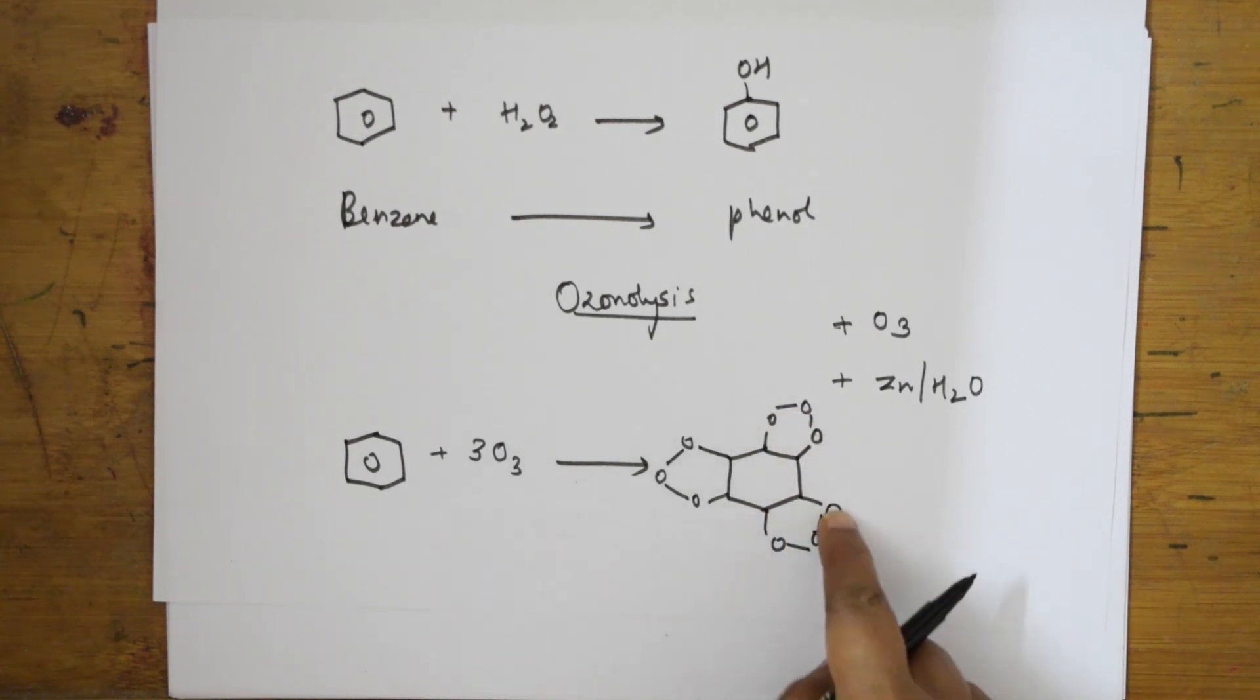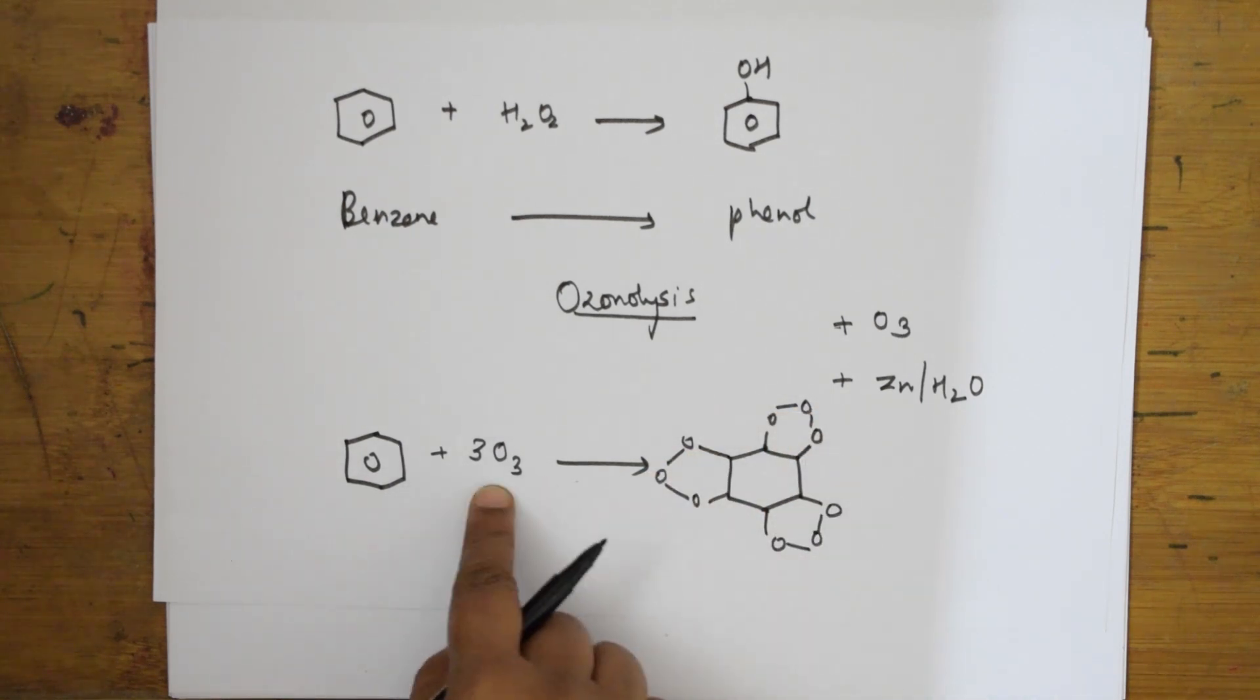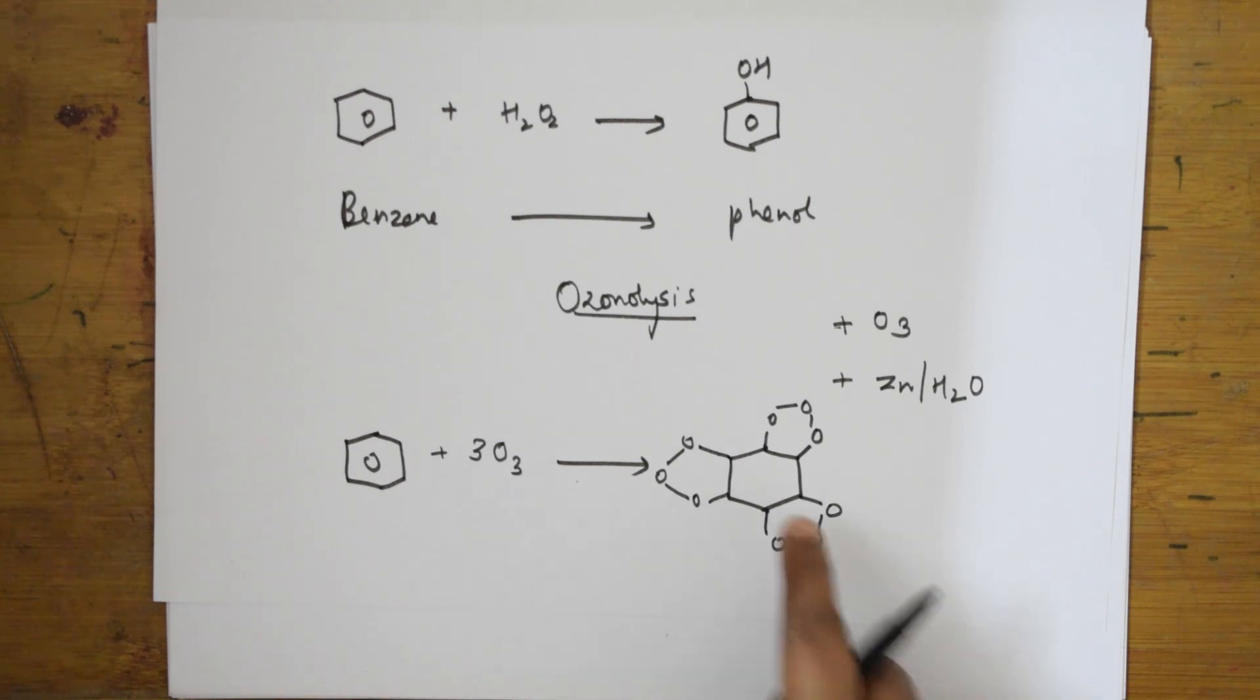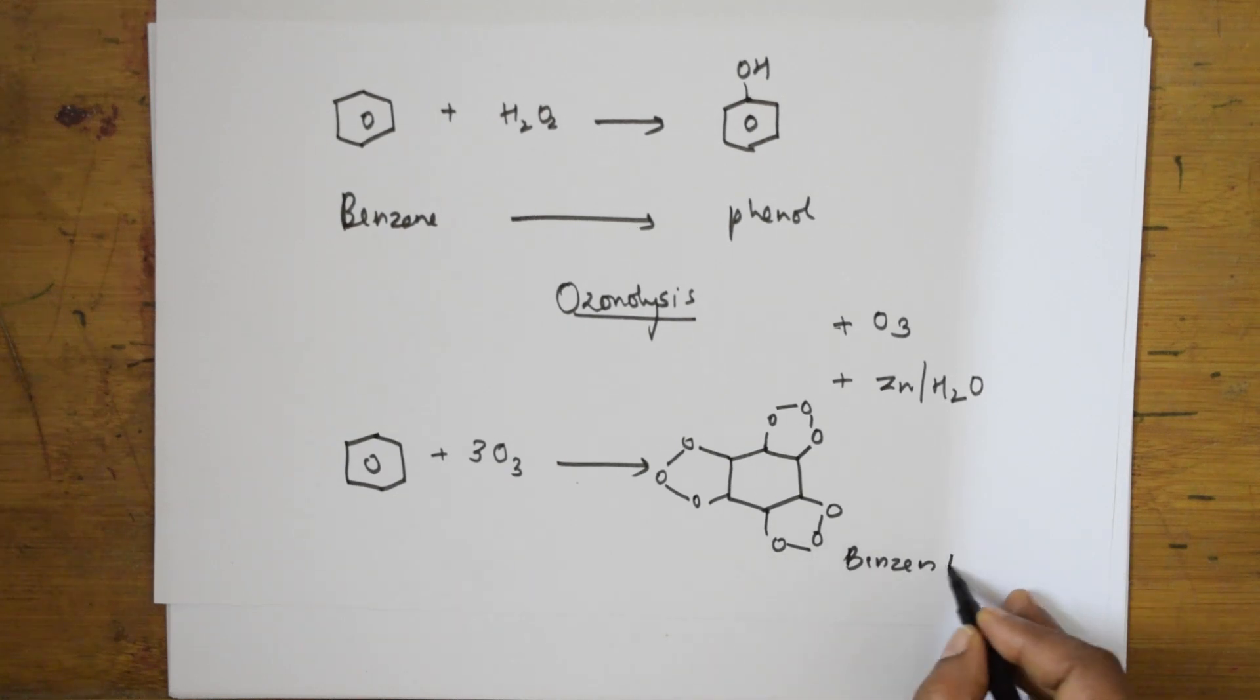So one, two, three, four, five, six, seven, eight, nine. This is the nine oxygens I have added. What is the name of this compound? This is called benzene triozonide.